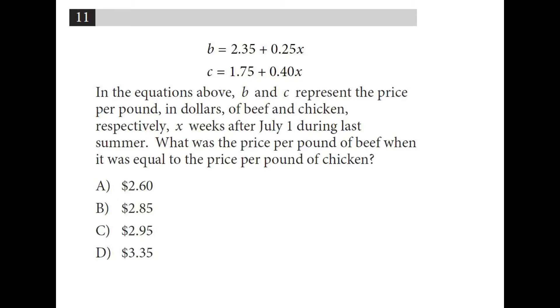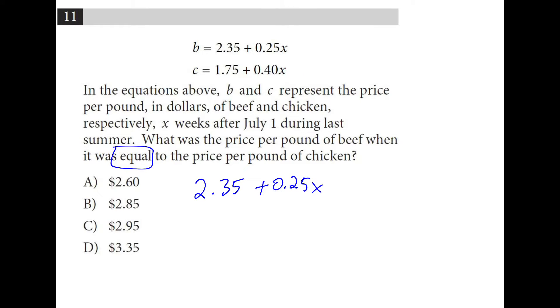We have a beef equation, a chicken equation, and we're told that they are equal. So we can set them equal to each other. And if you didn't want to deal with decimals, you can multiply everything by 100. I'll move the x's to the right, I have 15x. I'll move the numbers to the left, I have 60. So x is going to be 4.